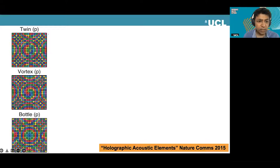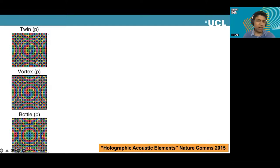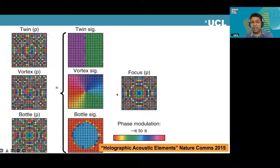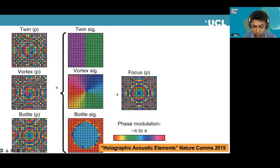These different colors are the different phases of the transducers. The amplitude is always one — we just turn them all on all the time — and the only thing we change is the timing between different transducers. By separating the pattern into a signature and a focal point — bringing all waves together to a single point — and then applying the signature: twin, because there's a left and right, exactly out of phase (one is minus pi, the other pi); or a vortex-type structure; or a bottle structure. That's why we call them twin, vortex, and bottle.